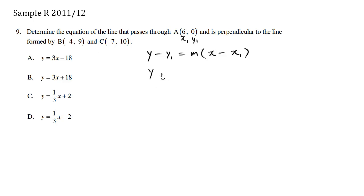So the equation of the line is going to be y minus 0 equals m times x minus my x1, which is 6. So we're almost done. We need to solve for m. Now we don't know what m is, but we're given two other points.